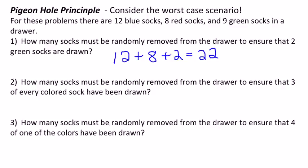Number two: how many socks must be randomly removed from the drawer to ensure that three of every colored sock have been drawn? Well, the worst case scenario is that we don't draw three of every sock, and so that would imply drawing maybe all of the blues and all of the reds at the same time.